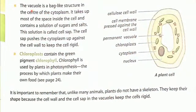The vacuole is a bag-like structure in the center of the cytoplasm. It takes up most of the space inside the cell and contains a solution of sugars and salts called cell sap. The cell sap pushes the cytoplasm up against the cell wall to keep the cell rigid. Chloroplasts contain the green pigment chlorophyll, which is used by plants in photosynthesis — the process by which plants make their own food. Unlike many animals, plants do not have a skeleton; they keep their shape because the cell wall and the cell sap in the vacuoles keep the cells rigid.